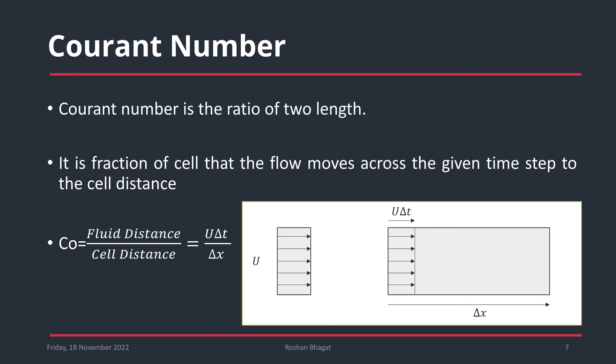The Courant number is the ratio of two lengths: the fluid travel distance and the cell distance. It is a fraction of the cell that the flow moves across in a given time step. For one-dimensional flow, the formula is U·ΔT / ΔX. For multi-dimensional flow, we need to consider velocities and distances in their respective directions, so for a two-dimensional case we account for delta X in both directions as well as the velocity and time step.